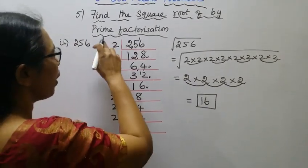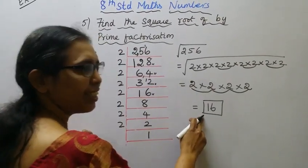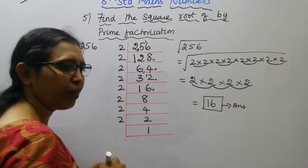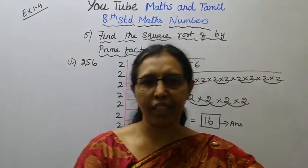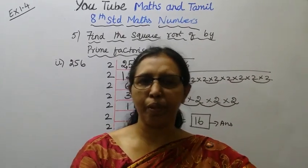The square root of 256 by prime factorization is 16. Please practice and follow this channel. It helps you to get 100 marks. Subscribe and click the bell button.